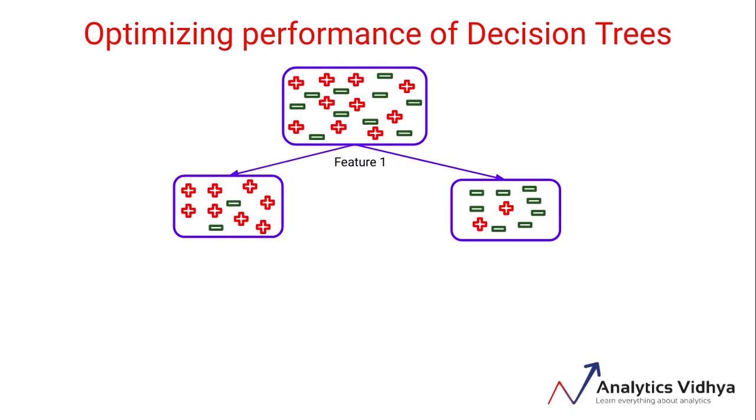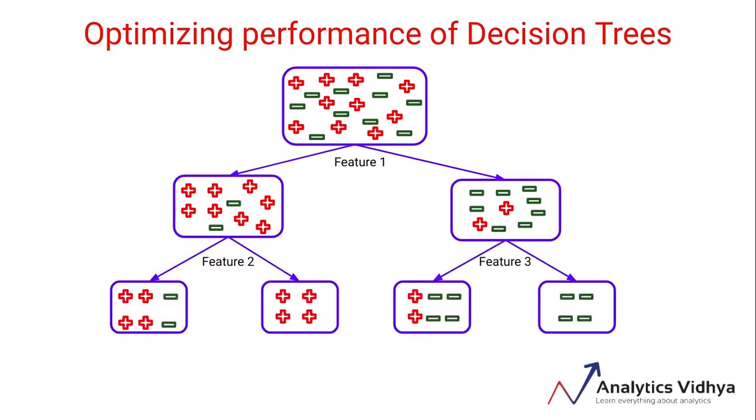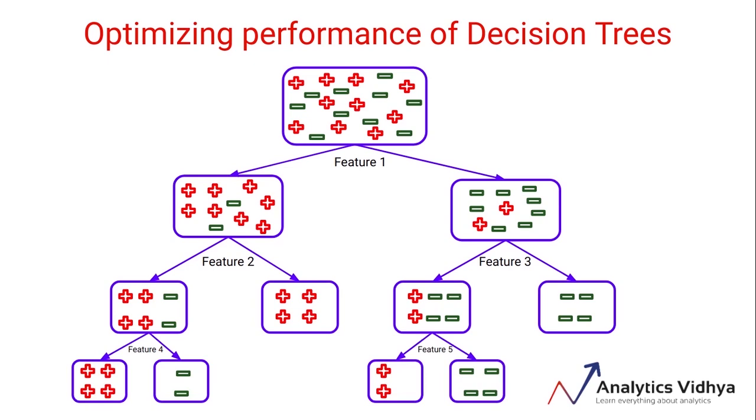We saw that we can split the population into sub-nodes based on the available features. Let's say for now that this is the first split on feature number one. We can further split these nodes to have more sub-nodes, let's say on feature number two and feature number three, and this split can keep on increasing, or we can say that the tree will keep on growing if we do not set any constraint on it.